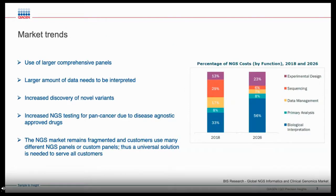Similarly, cancers that originate in different organs can share genetic drivers, so cancers in different organs with the same drivers may be most effectively treated using the same targeted molecular therapy. These observations led to the development of increasingly complex molecular tests that identify the molecular changes in the tumor, allowing a physician to target that tumor with a specific therapy. Over the last 20 years, the number of identified cancer drivers, as well as the targeted therapies available, has increased exponentially.